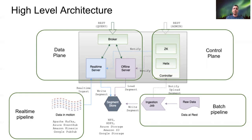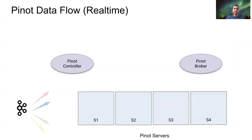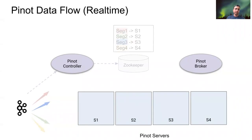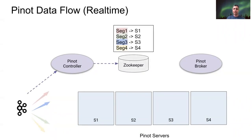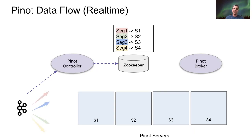Let's take an example of a real-time pipeline with Pinot to illustrate the flow of data. Here we have the Pinot controller, Pinot broker, four servers, and a Kafka topic with four partitions. The very first thing the controller will do is fetch the Kafka metadata, discover the four partitions, and decide that it needs to create four segments for each of these partitions. A segment refers to the unit of partitioning and replication in Pinot — basically a chunk or subset of your data. So you'll have many segments for a given table.